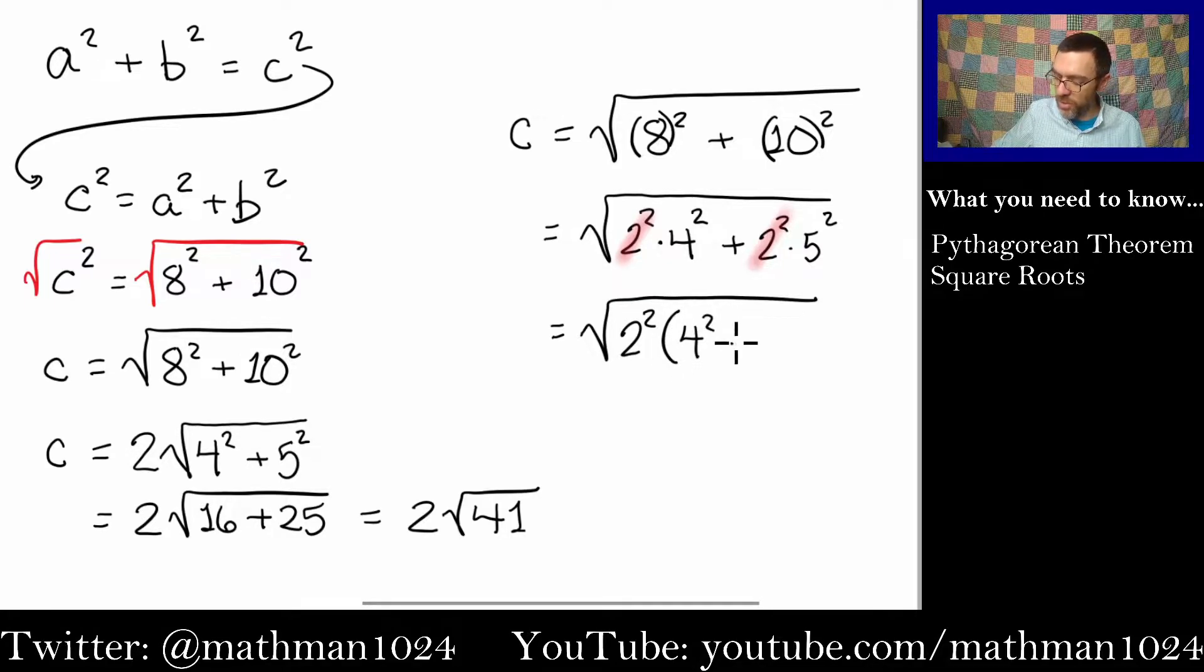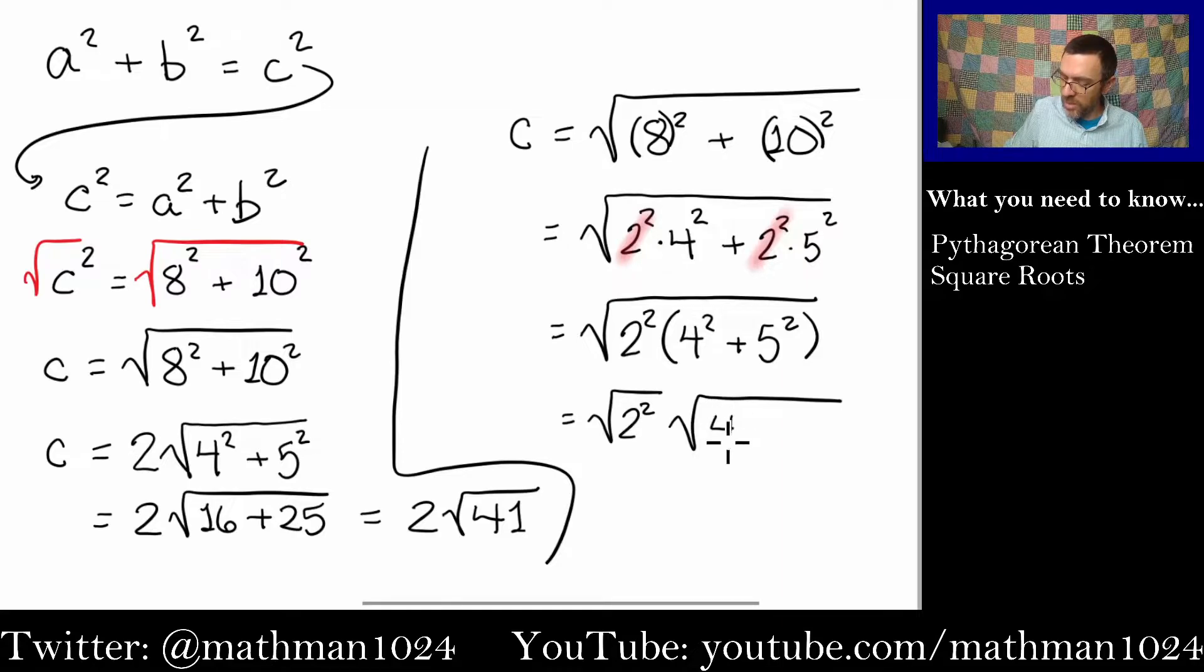When you factor that out, you would have 4 squared plus 5 squared. And properties of square roots would allow you to split this up. I don't want to show you a lot of steps here. You split this up as the square root of 2 squared times the square root of 4 squared plus 5 squared. And guess what the square root of 2 squared is? That's right. It's just going to be 2. And we already know what happens to this stuff inside. That just gives us the 41 that we had before. So you see that that's why it works.